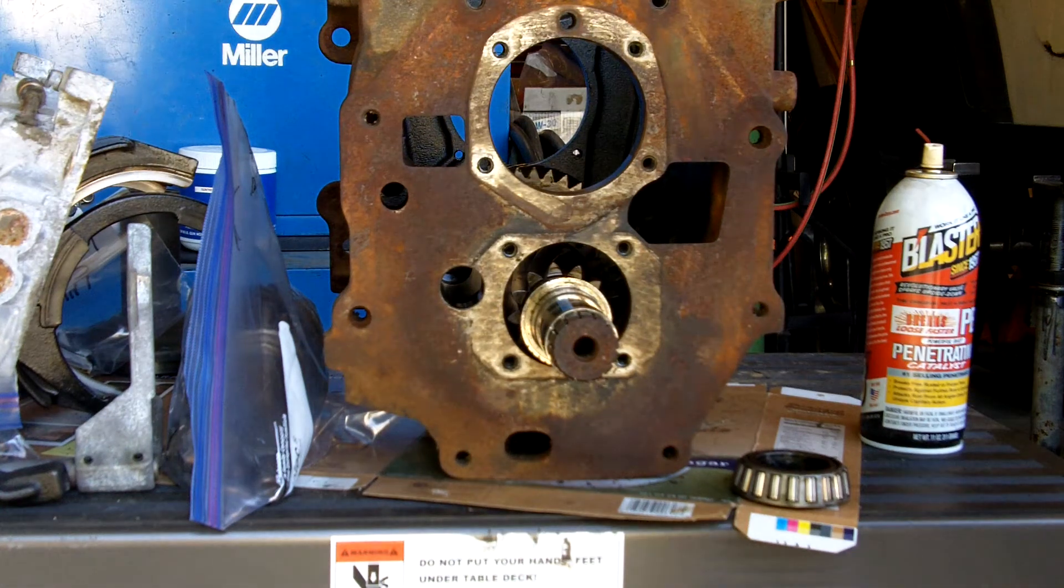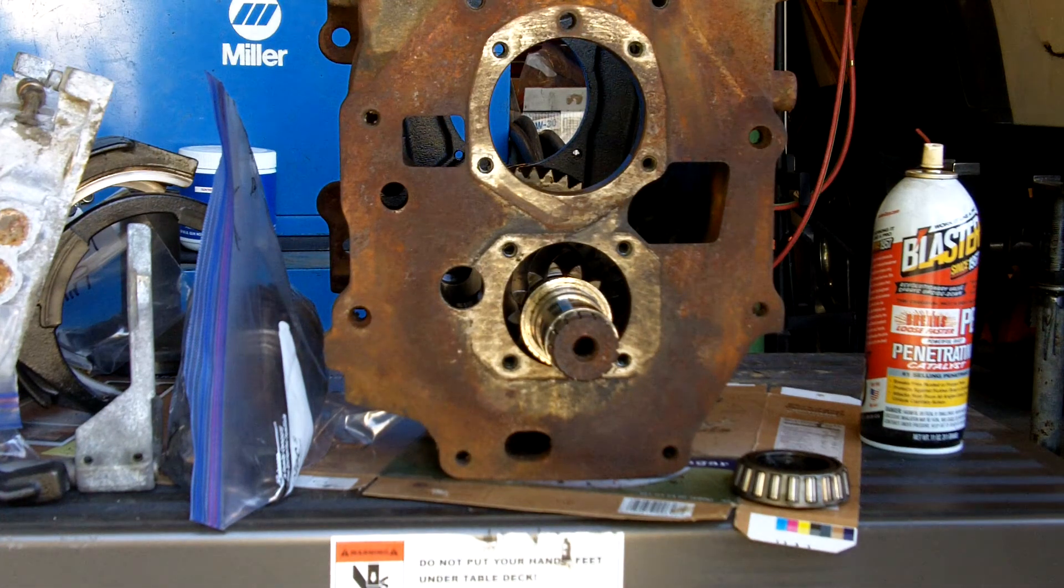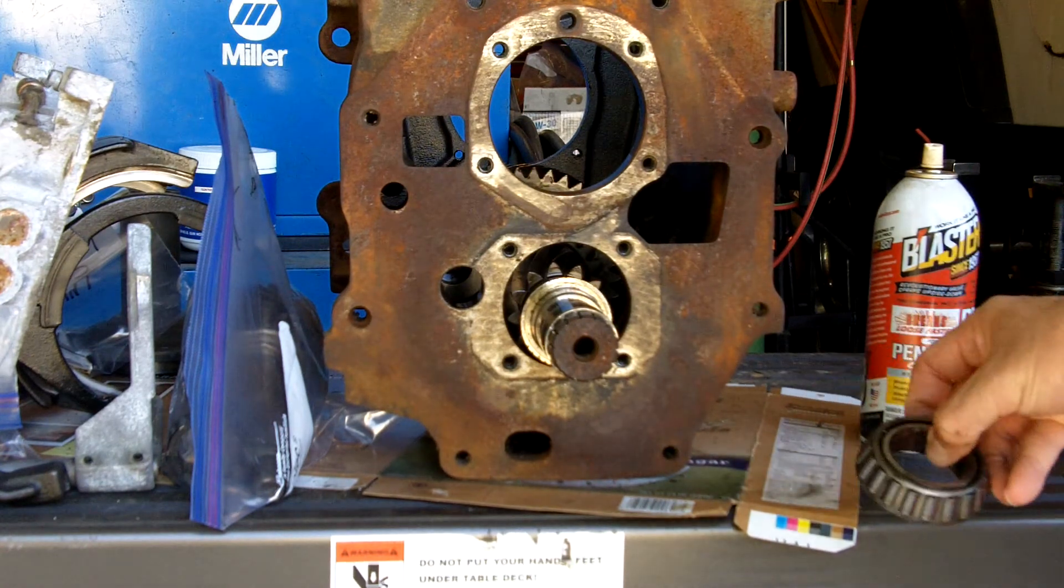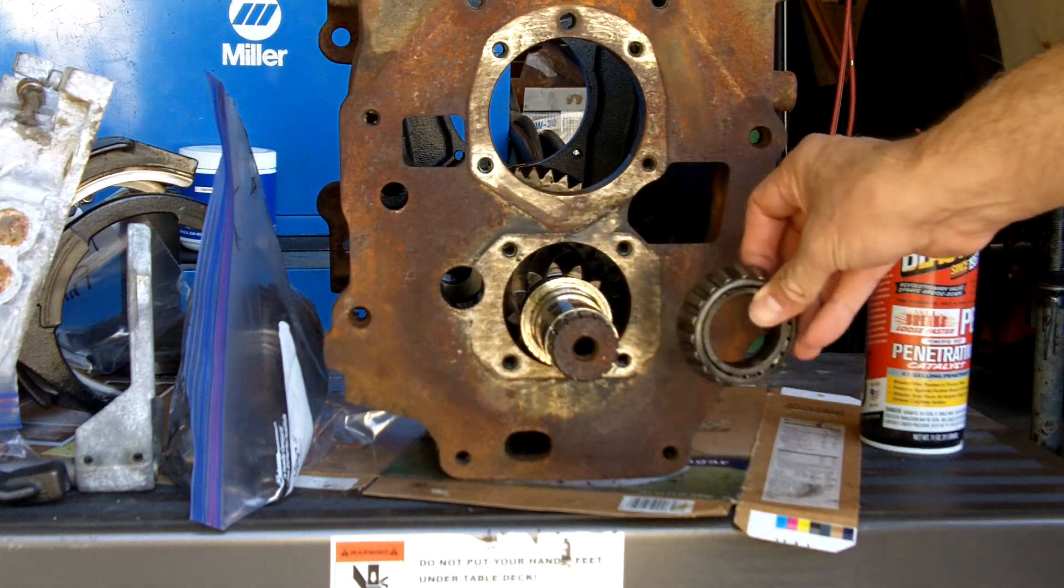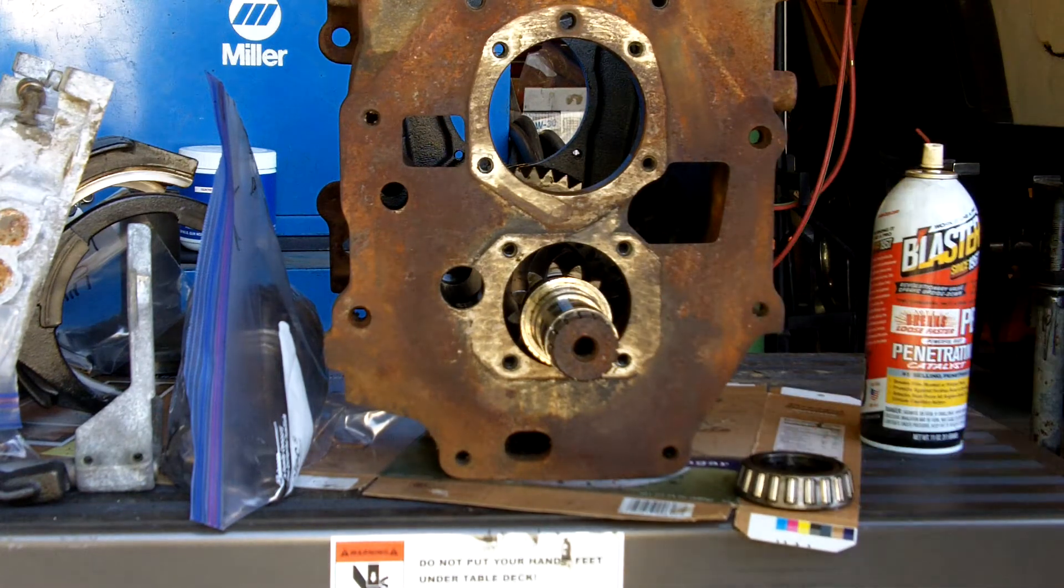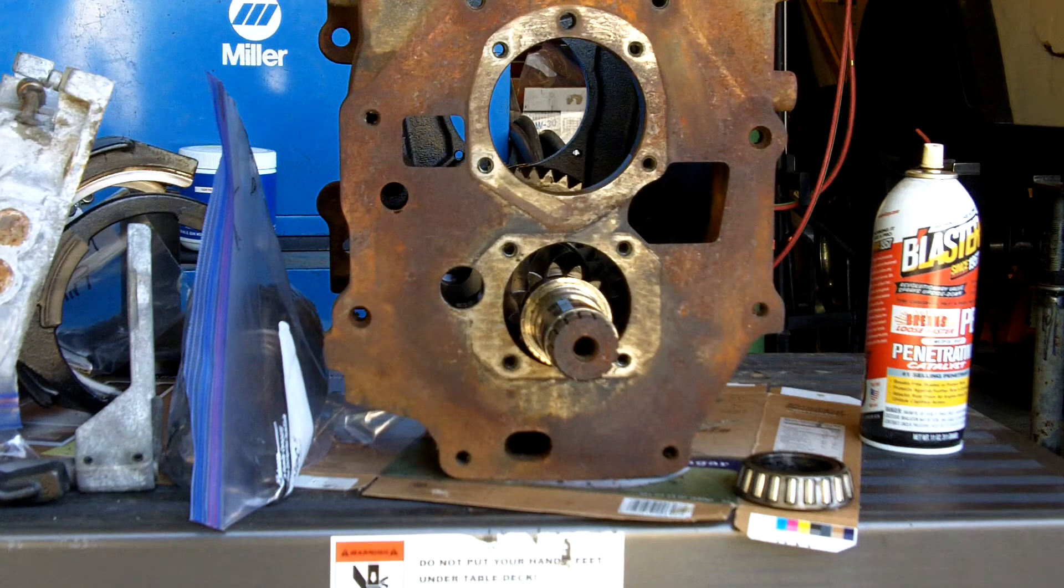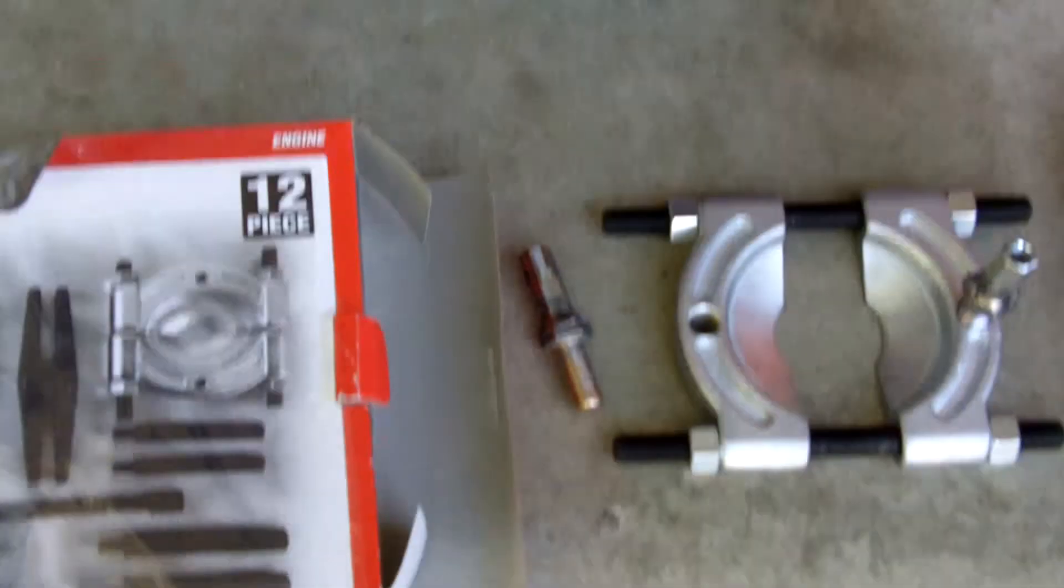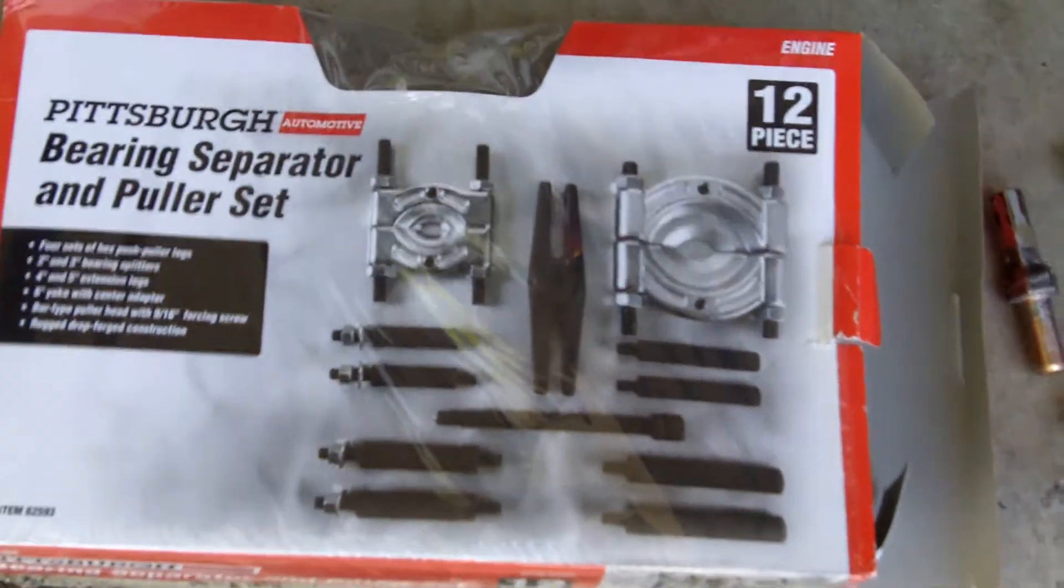So we're rebuilding a 90s Dodge NV4500. We needed to pull the rear countershaft bearing off. The manual recommends a QT 2014 puller and a QT 2019 collet.